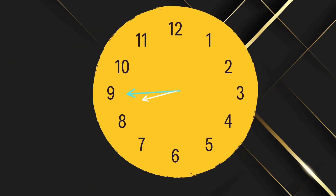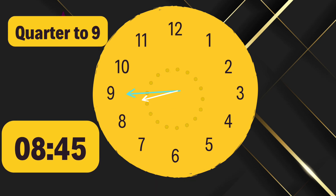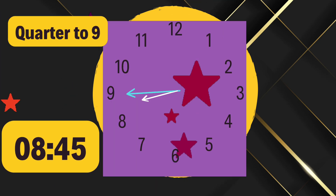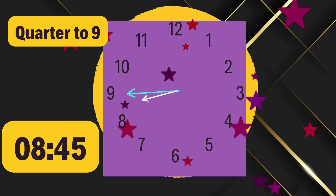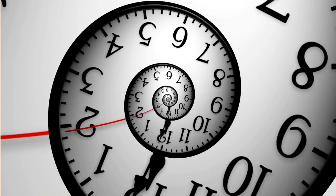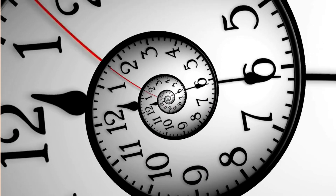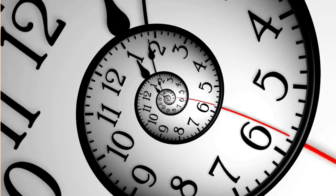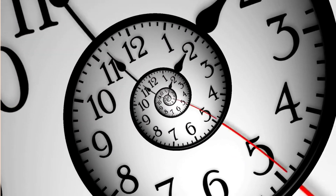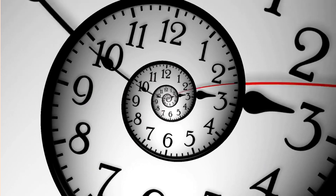Question three: if the hour hand is near nine and the minute hand is on nine, what's the time? The answer is quarter to nine. Excellent — you're becoming a time-telling pro! Great work, kids. You've done a fantastic job learning about time. Keep practicing and you'll be a time-telling expert in no time. See you next time!